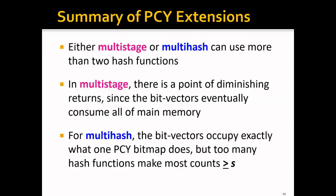To summarize these PCY extensions: both multi-stage and multi-hash can use more than two hash functions. For example, multi-stage can use four passes with three hash functions. For multi-stage specifically, there is a point of diminishing returns, since the bit vectors will eventually consume all main memory. For multi-hash, the bit vector occupies exactly what one PCY bitmap does, but too many hash functions will make most bucket counts larger than the support threshold, meaning you are no longer able to eliminate any candidate pairs.